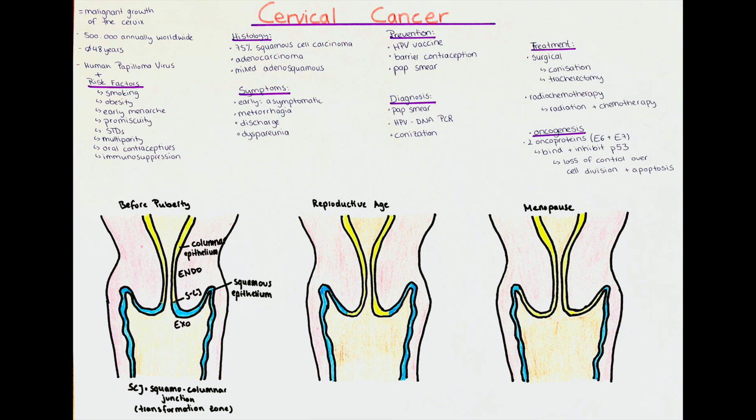With age, more and more of the endocervix bulges out towards the exocervix, which leads to an increased area of transformation zone. More cells will then change from columnar to squamous epithelium. This change in cell type, called metaplasia, bears a risk for cells changing in a wrong way, leading to dysplasia and, in some cases, eventually cancer formation.